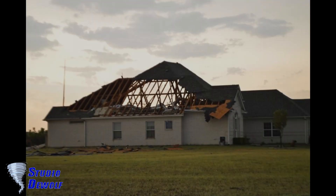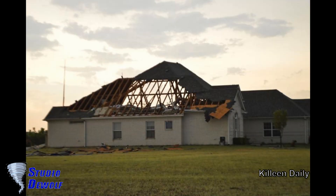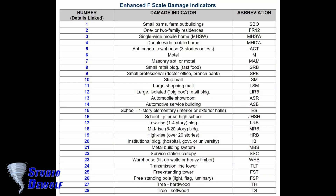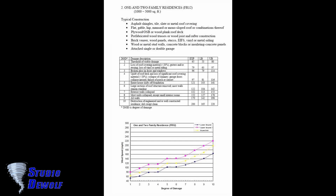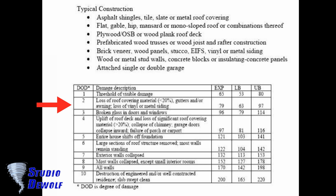We are going to make two simple exercises. In the first photo we see a residential house where most of the roof covering material on one side of the roof is gone. Looking at the damage indicators list, it seems to apply to one or two family residences — number 2. Examining the degrees of damage, which description fits? Loss of roof covering material less than 20%? No. Uplift of roof deck and loss of significant roof covering material, more than 20%? Yes — it is degree of damage number 4.